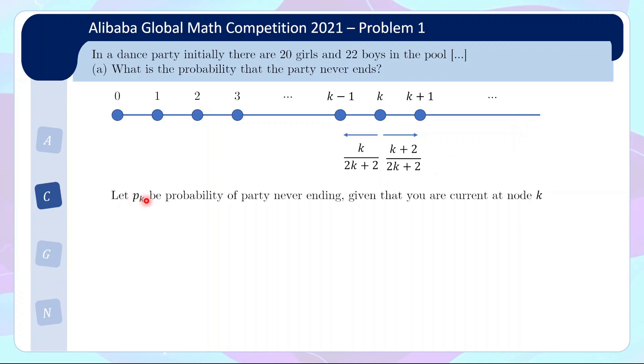Now, I'm going to let PK be the probability of the party not ending, given that you are currently at note K. So I think this is a pretty standard approach for this kind of problems, probability problems. And you can write down basically a recurrence relation or a relation between different probabilities based on the transition.